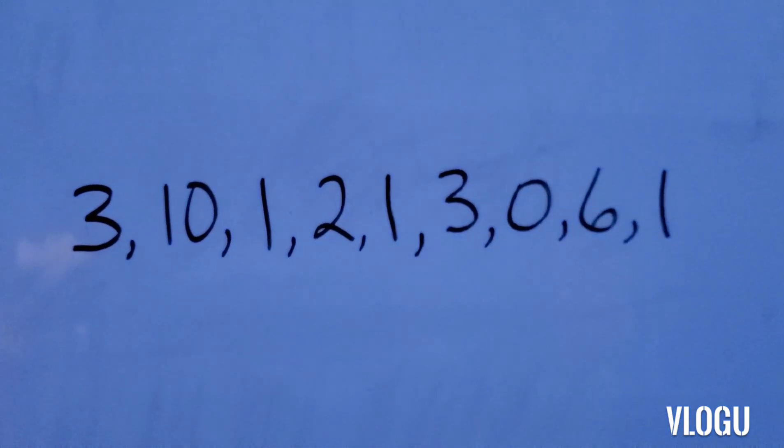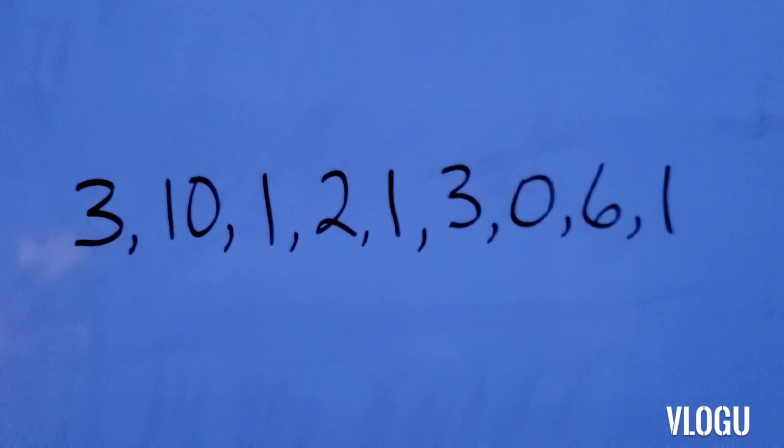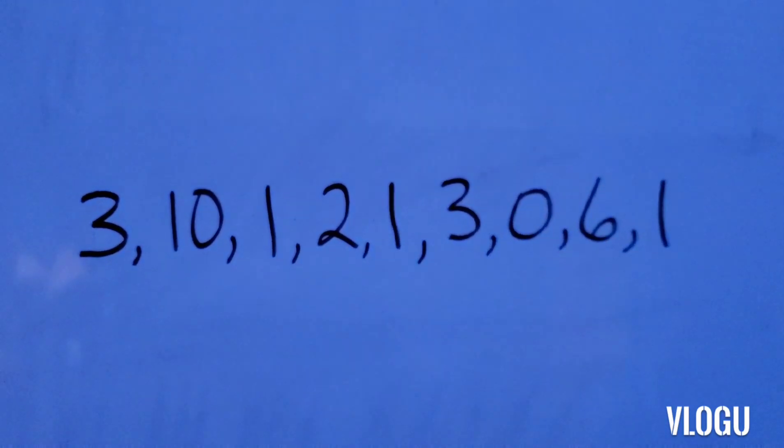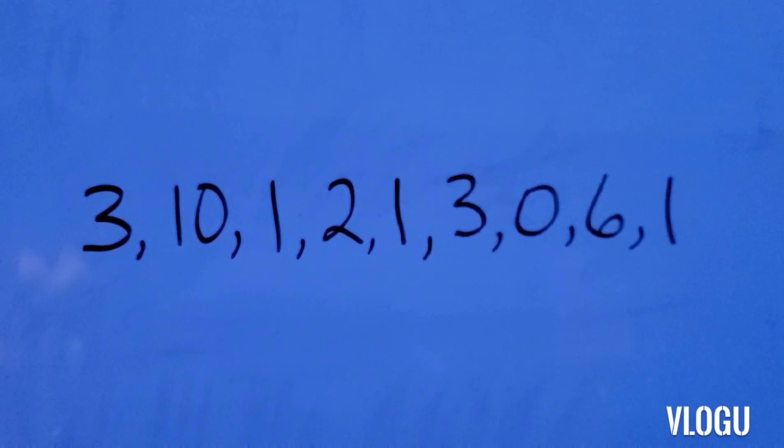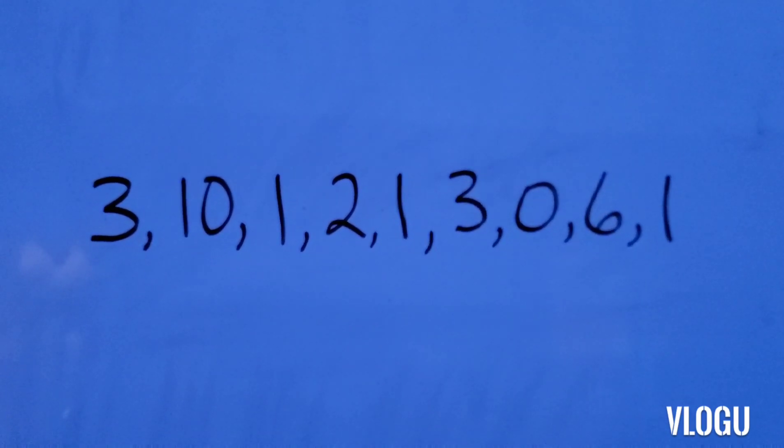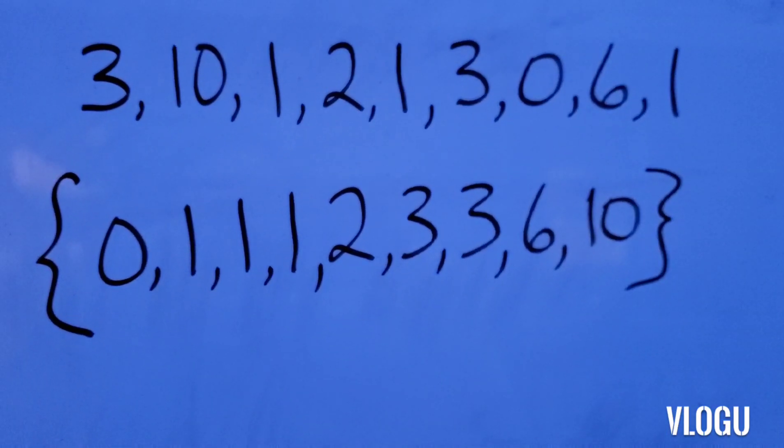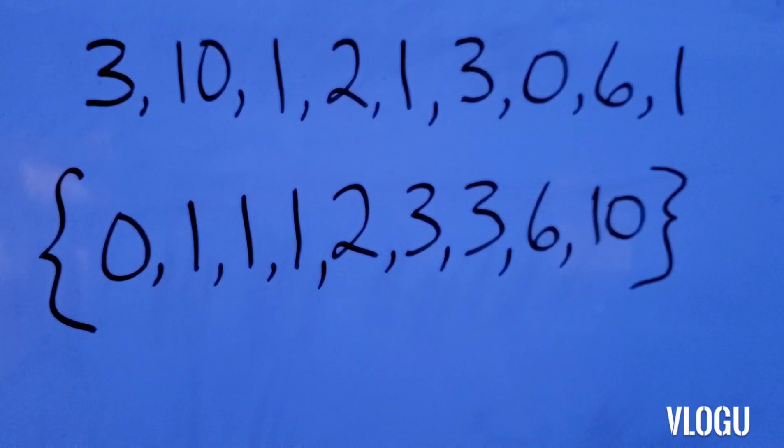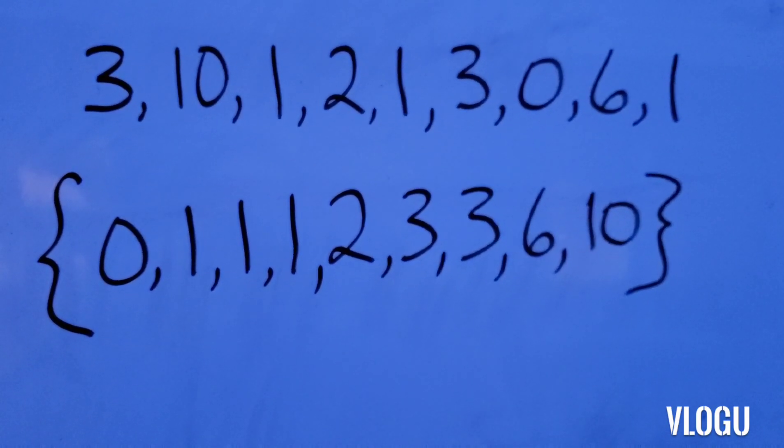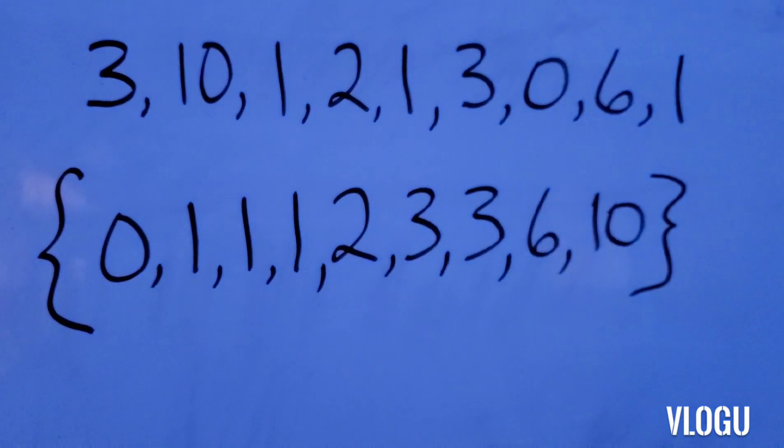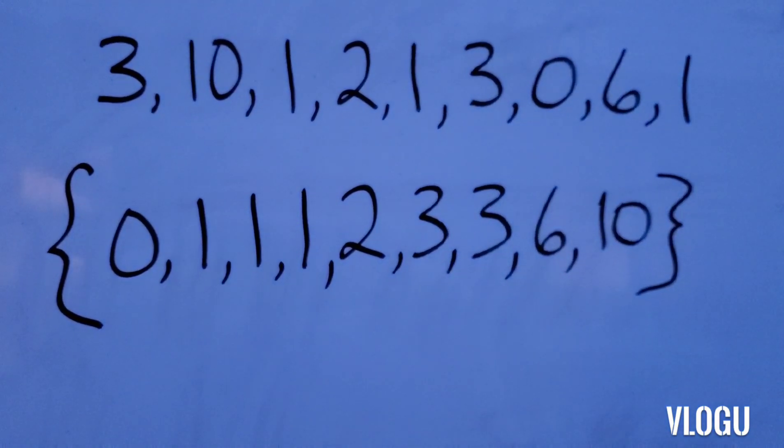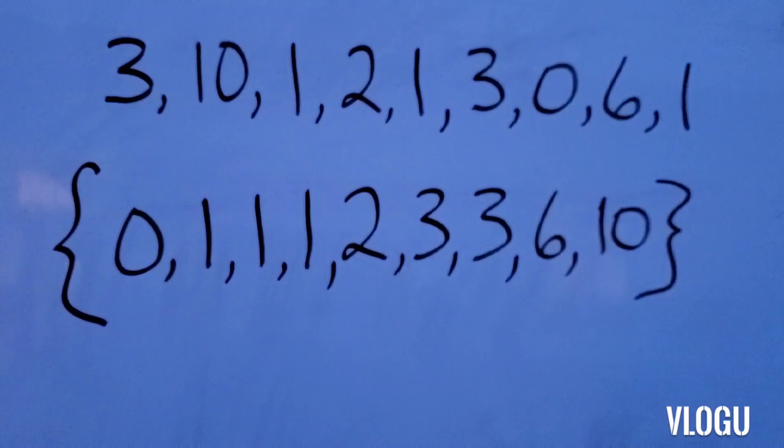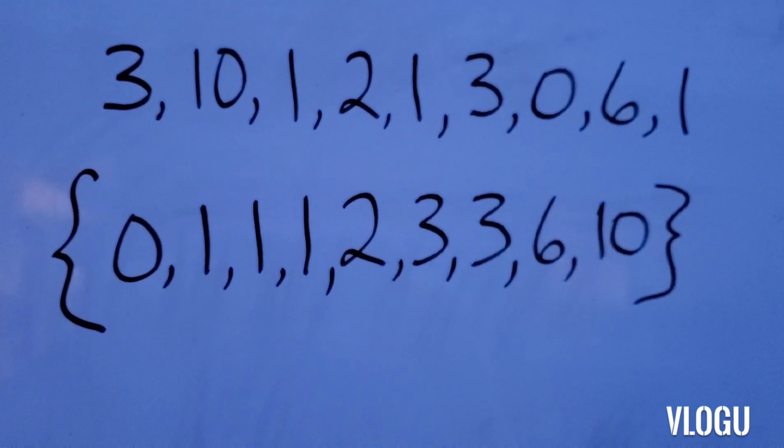The next example has different numbers. Three, ten, one, two, one, three, zero, six, and one. Now, these are sort of in a random order. What we're going to do first is put them in a numerical number set. These numbers are now in numerical order. Zero, one, one, one, two, three, three, six, and ten. Now, to find the mean, you technically do not need to put them in numerical order. However, future lessons for things that we will do, they will need to be in numerical order. So it is great to get in the practice of putting them in numerical order now.